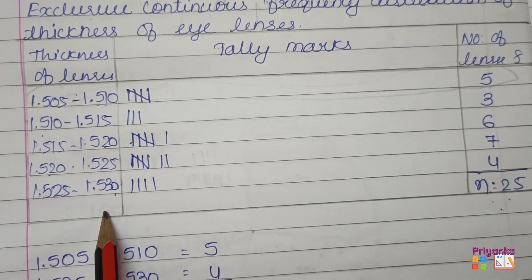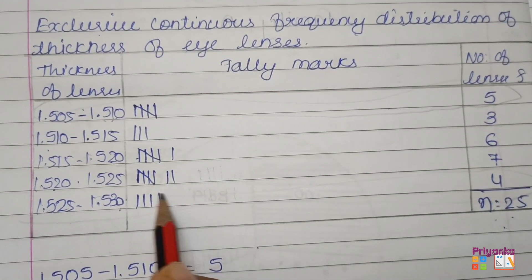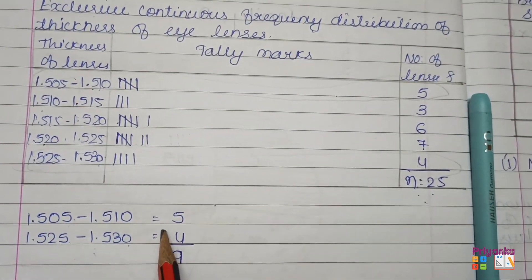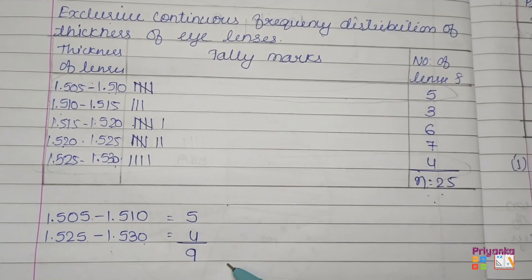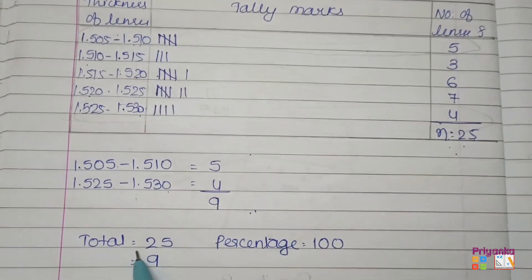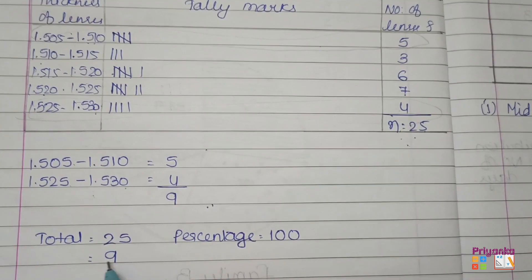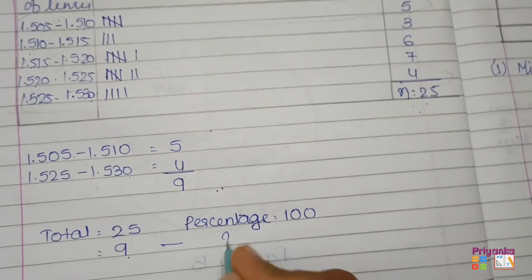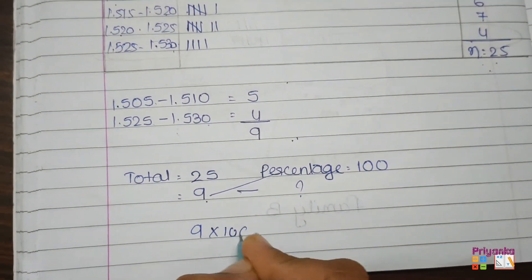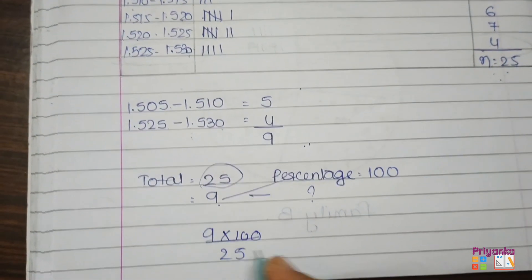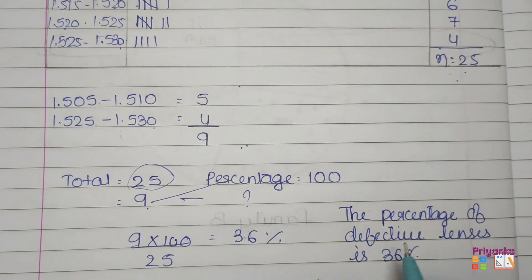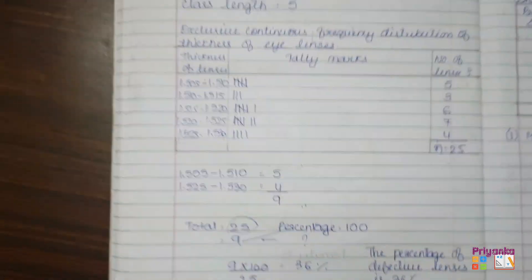More than 1.525 refers to the last class — both are considered defective lenses. We take the total defective frequency as 9 lenses out of 25. Using cross multiplication: 9 multiplied by 100, divided by 25, gives 36 percent. Therefore, the percentage of defective lenses is 36 percent. This completes the first question.